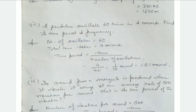The time period is 0.1 seconds. Frequency equals 1 divided by time period: 1 divided by 0.1, which equals 10 hertz.